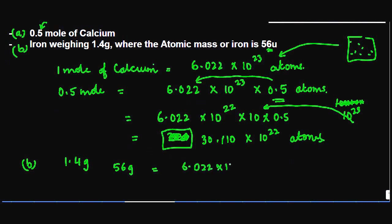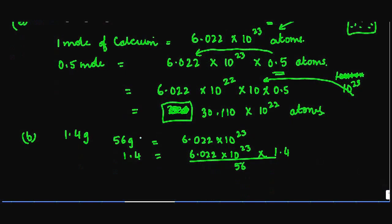So 1.4 grams will have 6.022 × 10^23 × 1.4 divided by 56. Basically, 56 grams contains this much, 1 gram contains this divided by 56, and 1.4 grams contains this times 1.4. If I simplify this, I'll get it divided by 40.